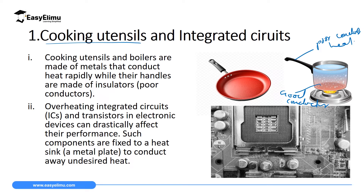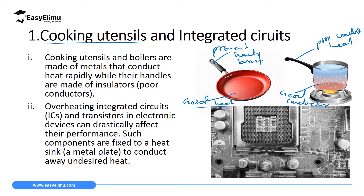The reason why the part close to the flame is a good conductor is so that it can conduct heat rapidly to cook the substance you are preparing. The reason why we use an insulator or a poor conductor where you handle is to prevent your hands from being burned. So in this case you have applied both good conductors and poor conductors in the manufacture of cooking utensils.